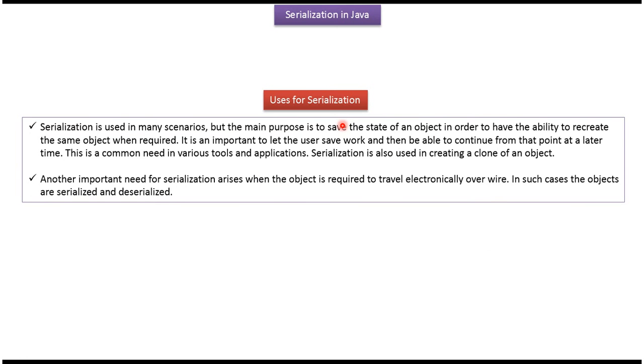Using serialization, we can save the state of an object in a file or DB. At a later point in time, we can recreate the same object using deserialization.